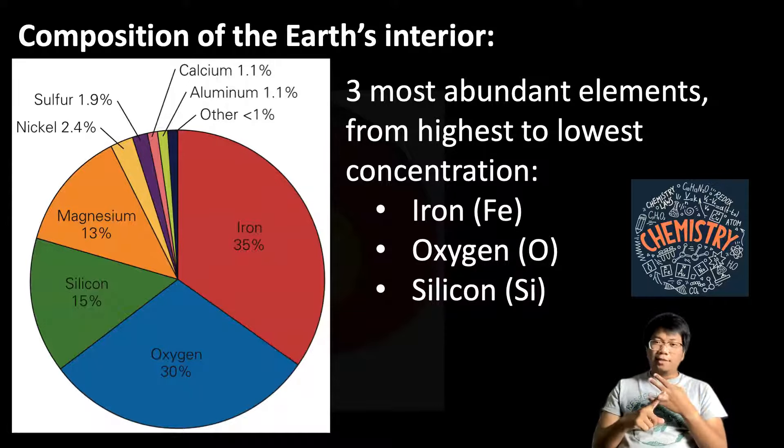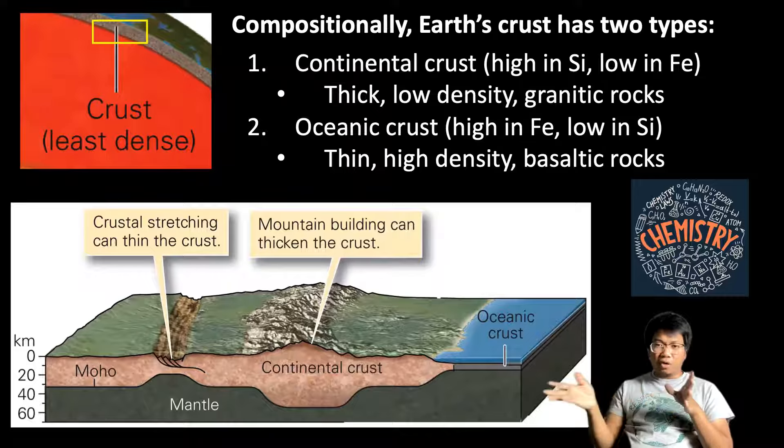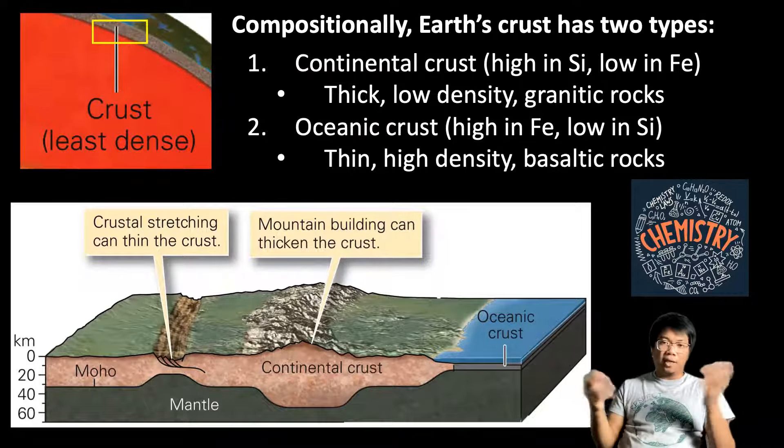Now let's look at the crust in more detail. Compositionally, we can actually subdivide the crust of the Earth into two types. The first one is the continental crust and the second one is the oceanic crust. The continental crust makes up the land masses that we see on Earth, and the oceanic crust is the one that underlies the ocean — we can't really see it directly, but it makes up the seafloor.